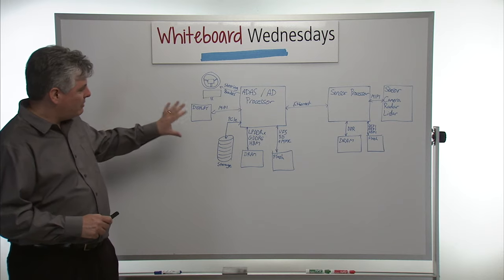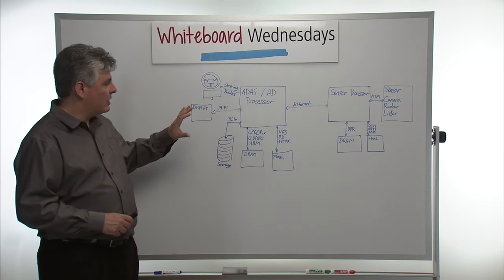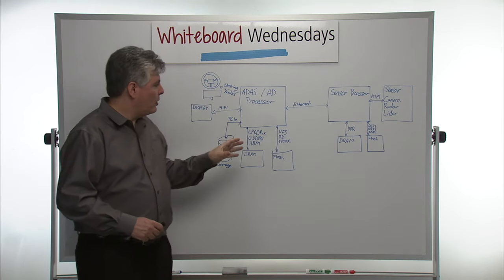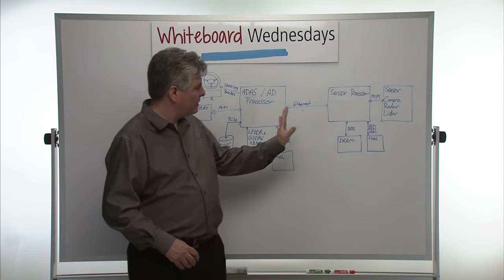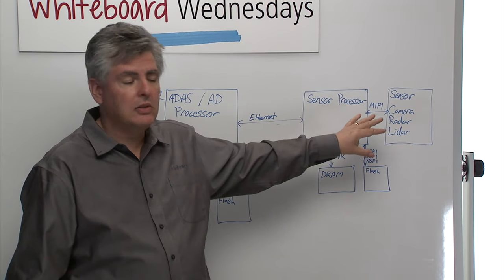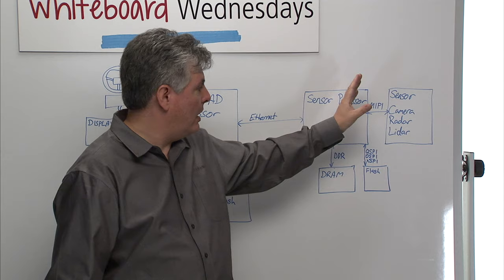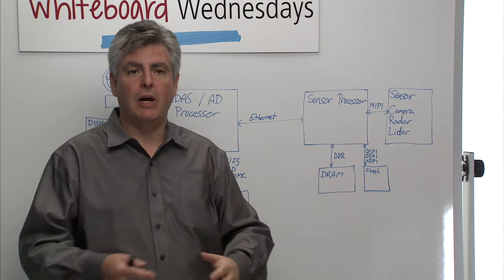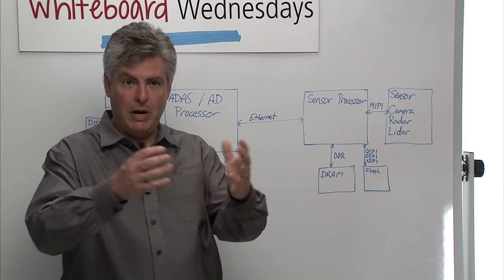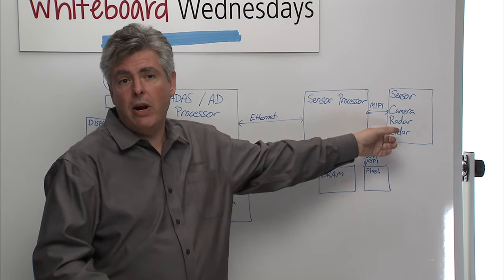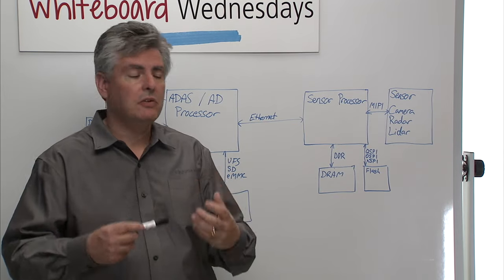If we look at a typical system that is doing the driver assistance or ADAS function, we have a couple of parts and there's really two main parts. Let me start over here. One part is the sensors. The sensors are connected to a sensor processor. The sensors are really picking up all the information around what's happening in the world around the vehicle. It may be a camera, it may be LIDAR, it may be radar, it may be some other form of sensor.